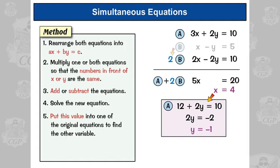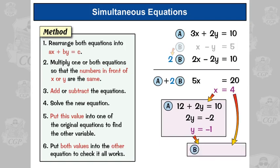So we've solved the simultaneous equations, or at least we think we have. It's always best to check by putting both values into the other equation to check it all works. So the other equation was B, so let's go back to our original equation B, x minus y equals five.